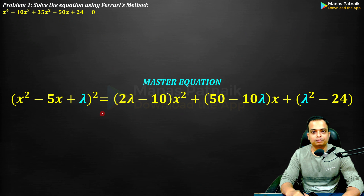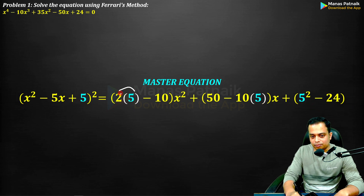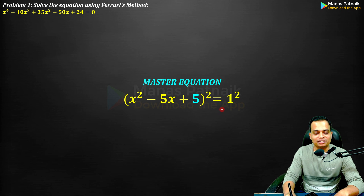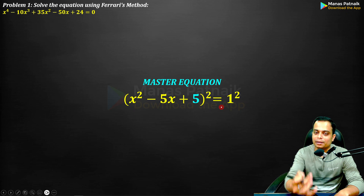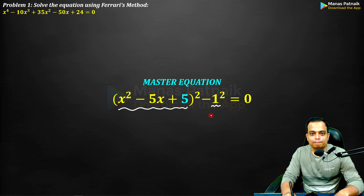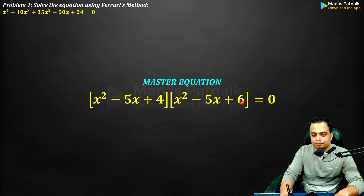Lambda = 5. Going back to the equation with lambda substituted: 2·lambda − 10 = 2·5 − 10 = 0, and 50 − 10·lambda = 50 − 50 = 0, so those two x-terms drop out. Then lambda² − 24 = 25 − 24 = 1 = 1². The RHS is a perfect square. The LHS is (x² − 5x + 5)², and the RHS is 1². Bringing 1² to the LHS gives a difference of squares: (x² − 5x + 5 − 1)(x² − 5x + 5 + 1) = 0.